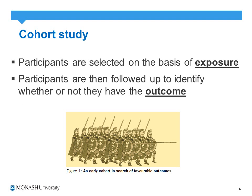In a cohort study, participants are selected on the basis of their exposure — whether they have been exposed or not exposed to a particular risk factor — and then they are followed up forward in time prospectively to identify whether or not they have a particular outcome of interest.